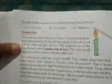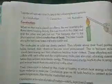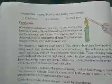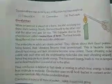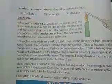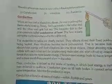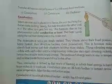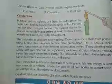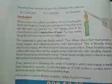There are three modes in which heat can be transferred: conduction, convection, and radiation. First, we will learn about conduction. When an iron rod is placed on a flame, the end touching the flame starts heating. Slowly, this heat travels along the rod and the other end gets heated too. This happens due to the phenomenon called conduction of heat — heat travels along the rod from the hotter end to the cooler end.